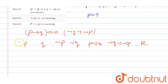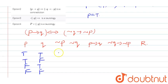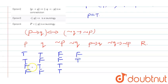The rows are: true-true, true-false, false-true, false-false. Negation of p: false, false, true, true. Negation of q: false, true, false, true. For p tends to q: true, false, true, true.